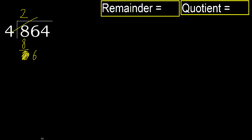4 multiplied by 2 is 8 — is greater. 4 multiplied by 1 is 4 — is not greater. Ok. Subtract. Next.